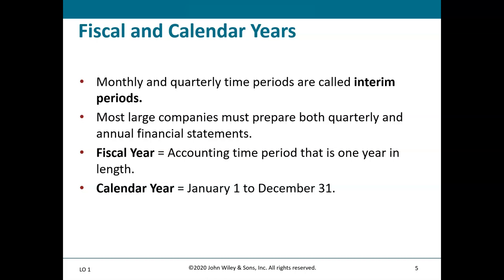Many companies use January 1 to December 31 as their fiscal year, but some industries shift it. Retail, for example, typically doesn't end on December 31 because November and December are big sales months and returns come in January after the holidays. So a retailer may have a fiscal year ending at the end of January or into February. The fiscal year doesn't have to mirror the calendar.